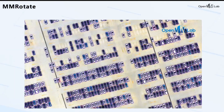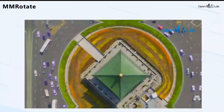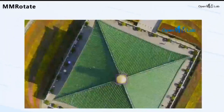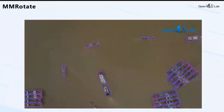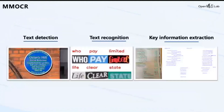MMRotate extends MMDetection to implement rotated object detection, which is useful in remote sensing or text detection. MMOCR is a toolkit for text detection, text recognition, and corresponding downstream tasks including key information extraction. It supports a variety of state-of-the-art models and provides a comprehensive set of utilities to help users assess the performance of models.